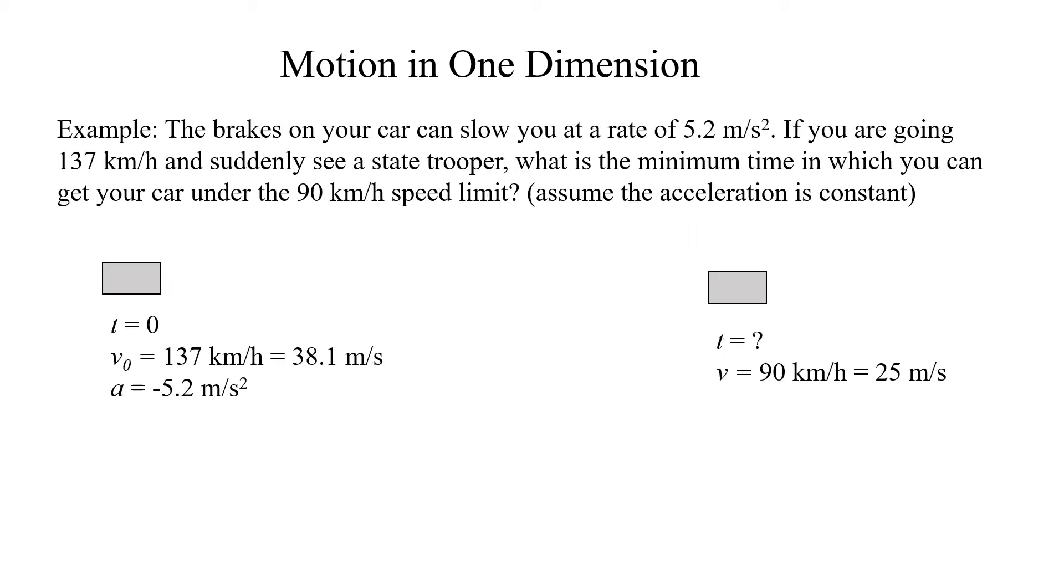All right, let's look at an example. The brakes on your car can slow you at the rate of 5.2 meters per second squared. If you are going 137 kilometers per hour and suddenly see a state trooper, what is the minimum time in which you can get your car under the 90 kilometer per hour speed limit? Assume the acceleration is constant.